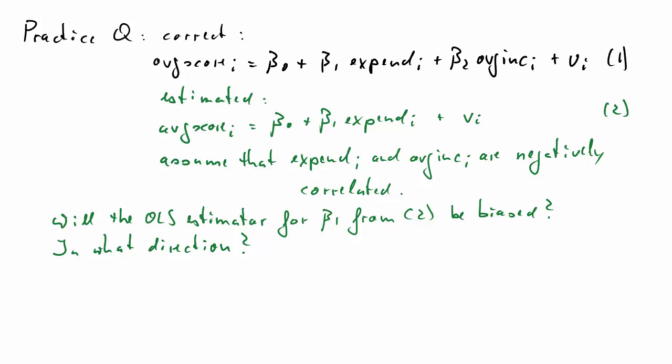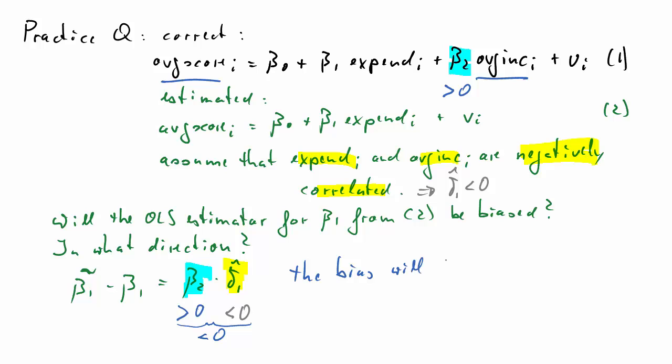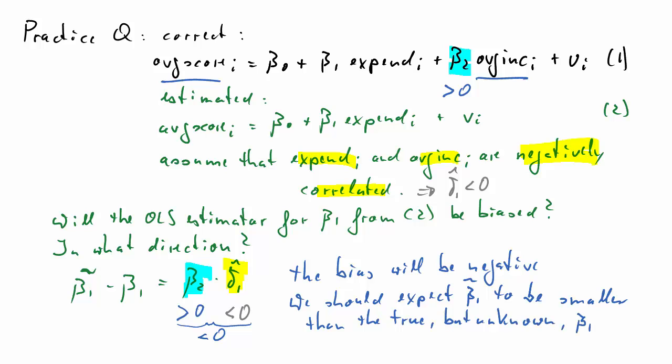So here is how to tackle this problem. Beta 1 tilde, the estimator from equation 2, minus beta 1 equals the bias. The assumption that expenditure and average income are negatively correlated means delta 1 hat is going to be negative. Now beta 2: does average income have a positive or negative impact on average score? Most likely, this will be a positive impact. There is evidence that children from richer families do better. So these two have opposite signs, that means altogether the bias is going to be negative. That means when we estimate beta 1 from equation 2, we will get a value that tends to be smaller than the true value for beta 1. So we will underestimate the effect of expenditure on the average score.